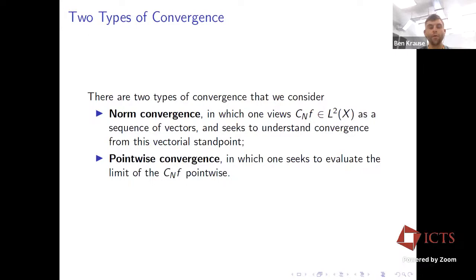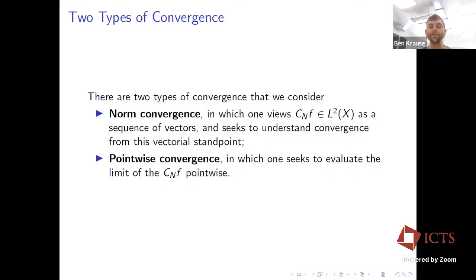There are two types of convergence to consider. The first is norm convergence, where you view the Cesàro averages as sequences of vectors in L². As n increases you get a sequence of vectors, and you ask to what extent you can make sense of them from a vectorial standpoint. The second type — which I'll focus on today — is pointwise convergence: you pick a physical location in X, evaluate all the Cesàro averages at that point, and see to what extent you can detect a limiting behavior of that sequence of numbers.